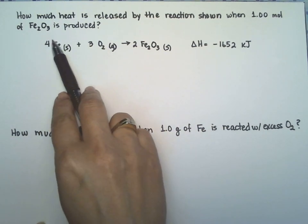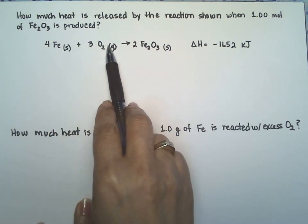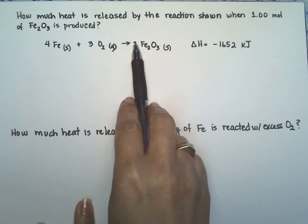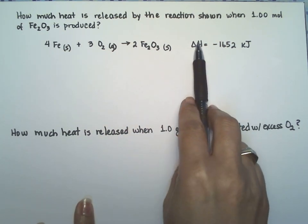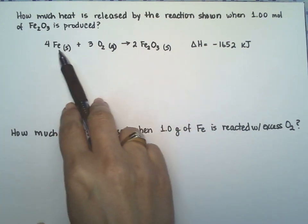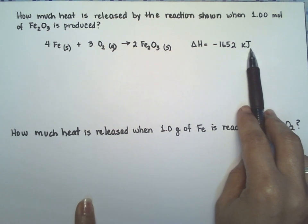They give you the reaction of four moles of iron solid reacting with three moles of oxygen gas, forming two moles of di-iron trioxide. The enthalpy for this reaction is minus 1,652 kilojoules.